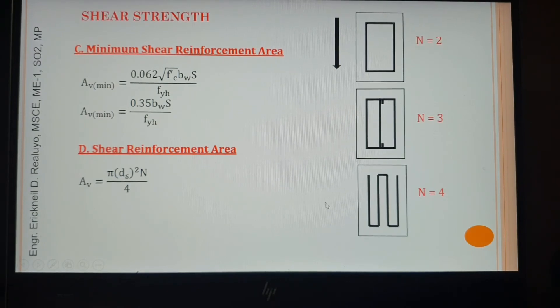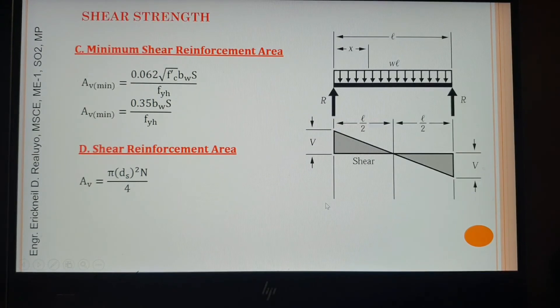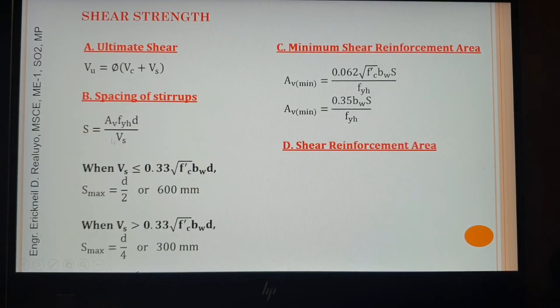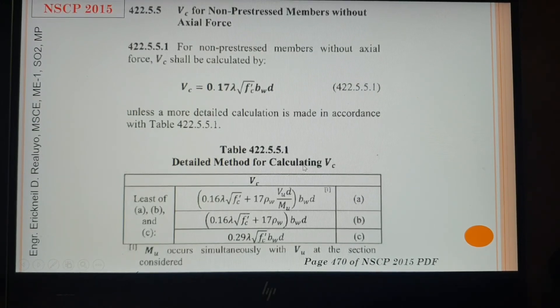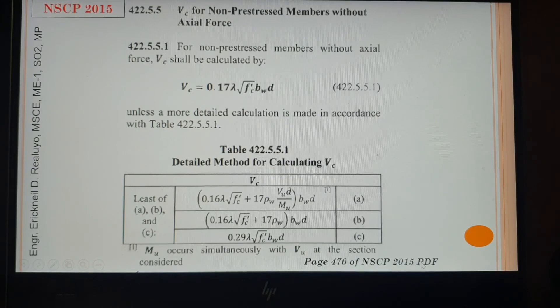Let's go to the calculation of Vc. Take note, what we need is the Vs for us to have the spacing. And for us to have the Vs, we need Vu as well as Vc. So for the calculation of Vc, here is the provision. This is an excerpt from NSCP 2015. The page number is this one, page number of NSCP 2015 PDF.